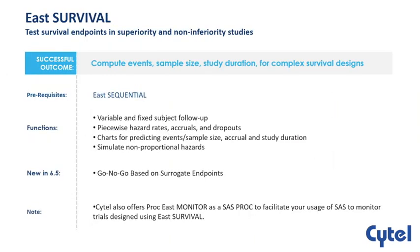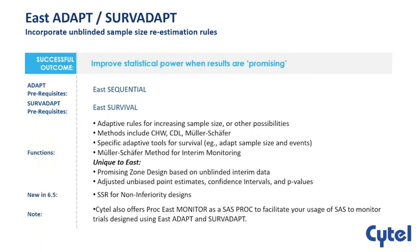A quick overview of the Survival module: it essentially facilitates the use of group sequential designs as well as the interim monitoring of such designs. In the new version of East, we've added the capability to perform go/no-go decisions at an interim with a surrogate endpoint highly correlated with your final endpoint. But today's emphasis is on Servadapt, where we'll see different rules for increasing the sample size — and in this case the event size — without inflating type 1 error.